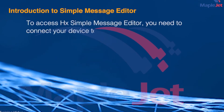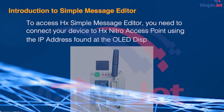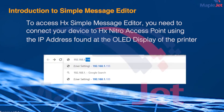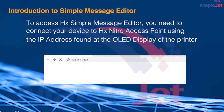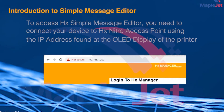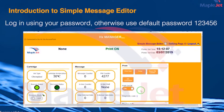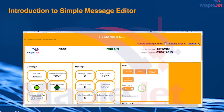To access HX Simple Message Editor, you need to connect your device to the HX Nitro Access Point using the IP address found at the OLED display of the printer. Log in using your password; otherwise, use the default password 123456.